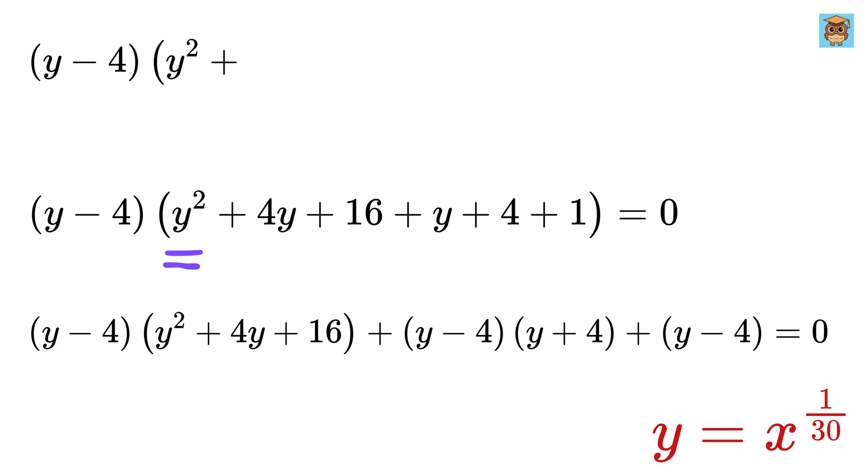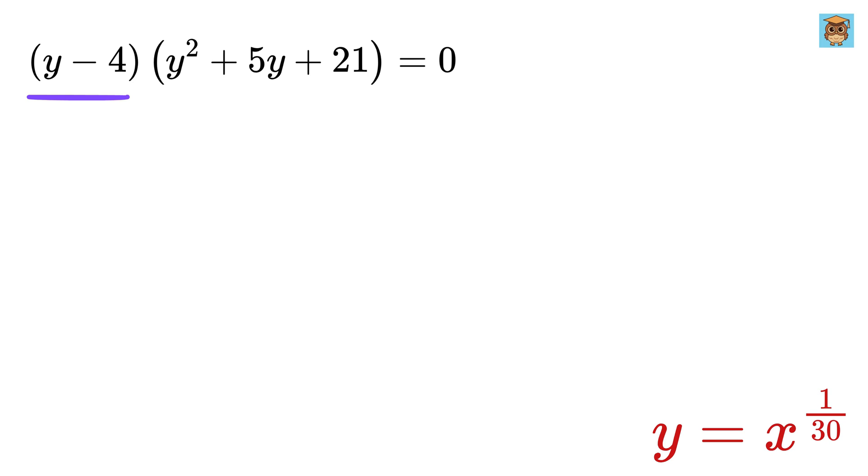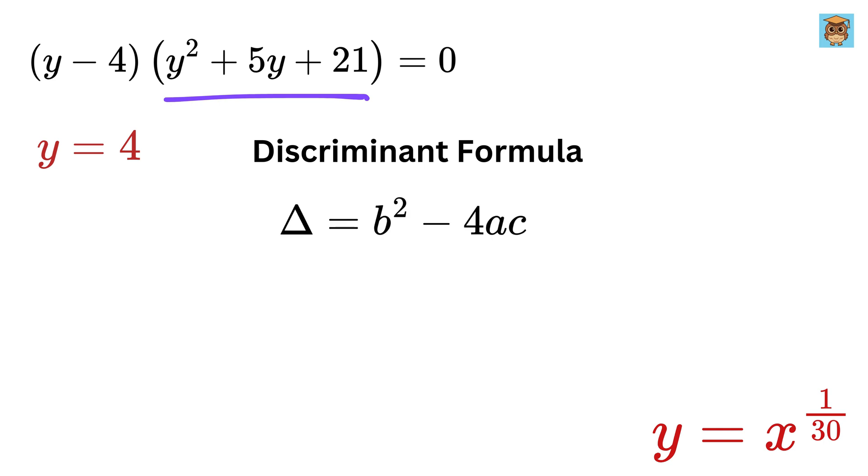Solving the first part, y minus 4 equals 0, we get y equals 4. Now let's solve the second part, y squared plus 5y plus 21 equals 0. This is a quadratic equation. To determine if it has real solutions, we use the discriminant formula, which is b squared minus 4 times a times c. Here a is 1, b is 5, and c is 21.